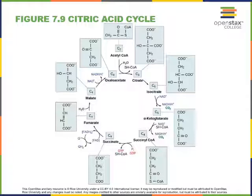In the next step, fumarate reacts with a water molecule to form malate, another four-carbon molecule. And in the last step, malate will be converted into oxaloacetate in an oxidation reaction where the oxidizing agent NAD becomes reduced to form NADH. For one pyruvate going through the cycle, we get three NADH molecules, one GTP (which can be converted to ATP), and one FADH2.